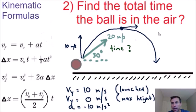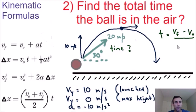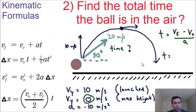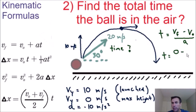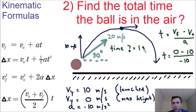Rearranging the formula, time equals the final velocity minus the initial velocity, all divided by the acceleration. Plugging in our values: final velocity is zero (at max height), initial velocity is 10 meters per second (vertical launch velocity), and acceleration is negative 10 meters per second squared. So time equals zero minus 10 over negative 10, which equals positive 1 second.